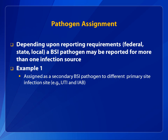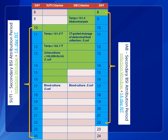Another concept to discuss relates to the assignment of a pathogen to more than one infection source. Depending on federal, state, and local reporting requirements, a secondary BSI pathogen may be assigned to two different primary site infections — for example, a UTI and an IAB infection. In this example, a pathogen is assigned as a secondary BSI pathogen to two different primary infection sites: UTI and non-surgical IAB. Two primary site infections have been identified, and a blood culture collected on day 17, which is within both the SUTI and the non-surgical IAB secondary BSI attribution period, has a matching pathogen to both primary site infections. Therefore, both primary sites are reported to have a secondary BSI.